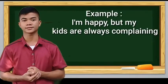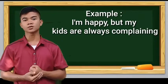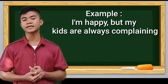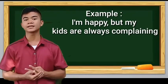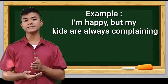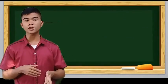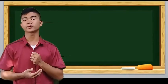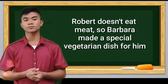Example of the compound sentence: I'm happy, but my kids are always complaining. I'm happy is a first independent clause, and the kids are always complaining is the second independent clause, and but is the linking word. So the compound sentence has two independent clauses and one linking verb.